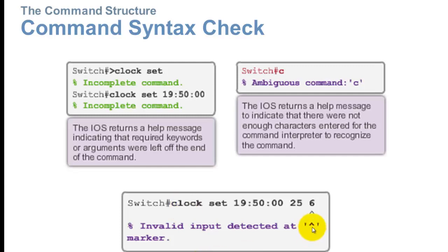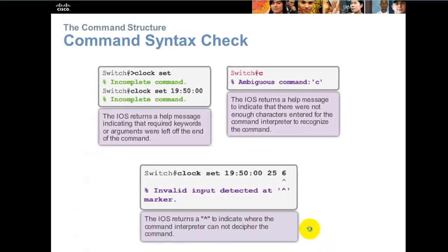This one also has a caret, that's what this is called, the top hat. We've typed in clock, space, set, space, hours, colon, minutes, colon, seconds, 25, space, 6. Notice the caret or the top hat is pointing to the 6. The reason this is, is we should have spelled out the month of the year. For instance, 6 would be June, J-U-N-E. So it's saying hey, your error is right here when you go to correct it.